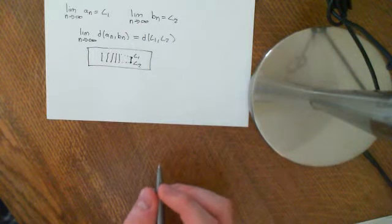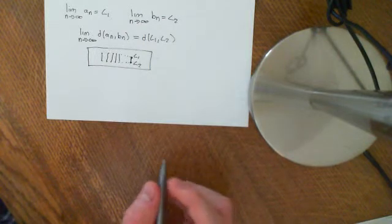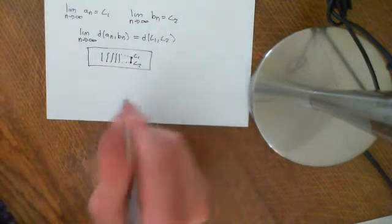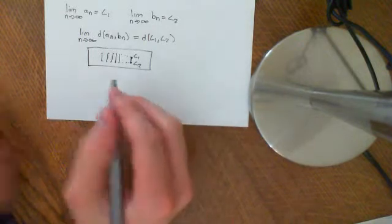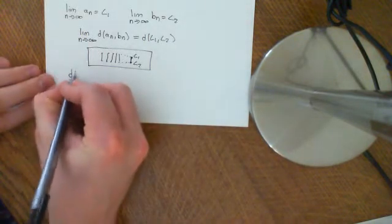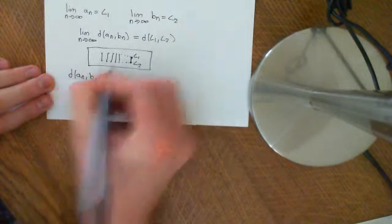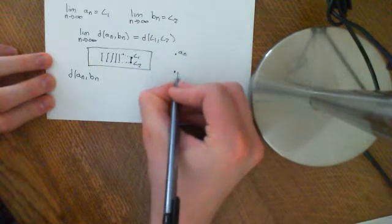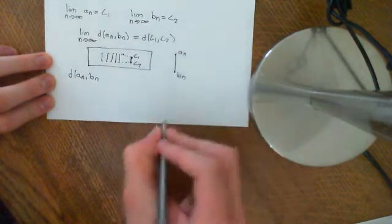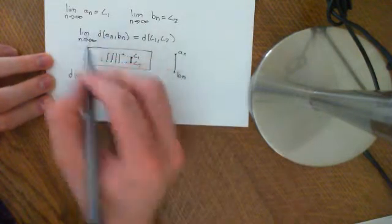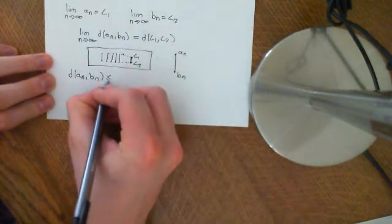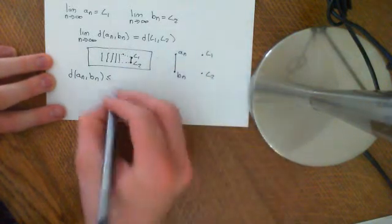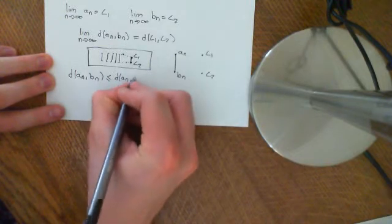A way that we can prove this is as follows. Initially it will seem a little bit unmotivated, but bear with it for a few moments. We can use the triangle inequality on the distance between aN and bN. Let's draw it separately: we have aN and bN, and we are calculating the distance between aN and bN — this is the nth term of this sequence. We know by the triangle inequality, with the limits L1 and L2 over here, that this is going to be less than or equal to the distance between aN and L1.